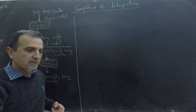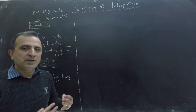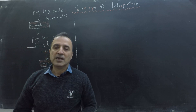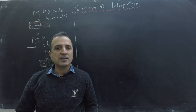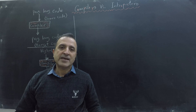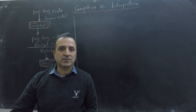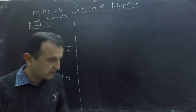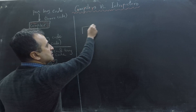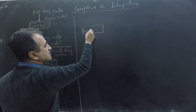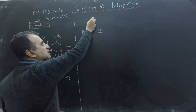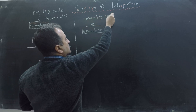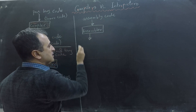An assembler takes input assembly code and produces machine code. The reason compilers usually do not produce machine code by themselves is because there already exist many well-written assemblers that can do this job. So instead of making the compiler more complicated, the compiler just calls an assembler to produce the machine code. The input to the assembler is assembly code and the output is machine code.